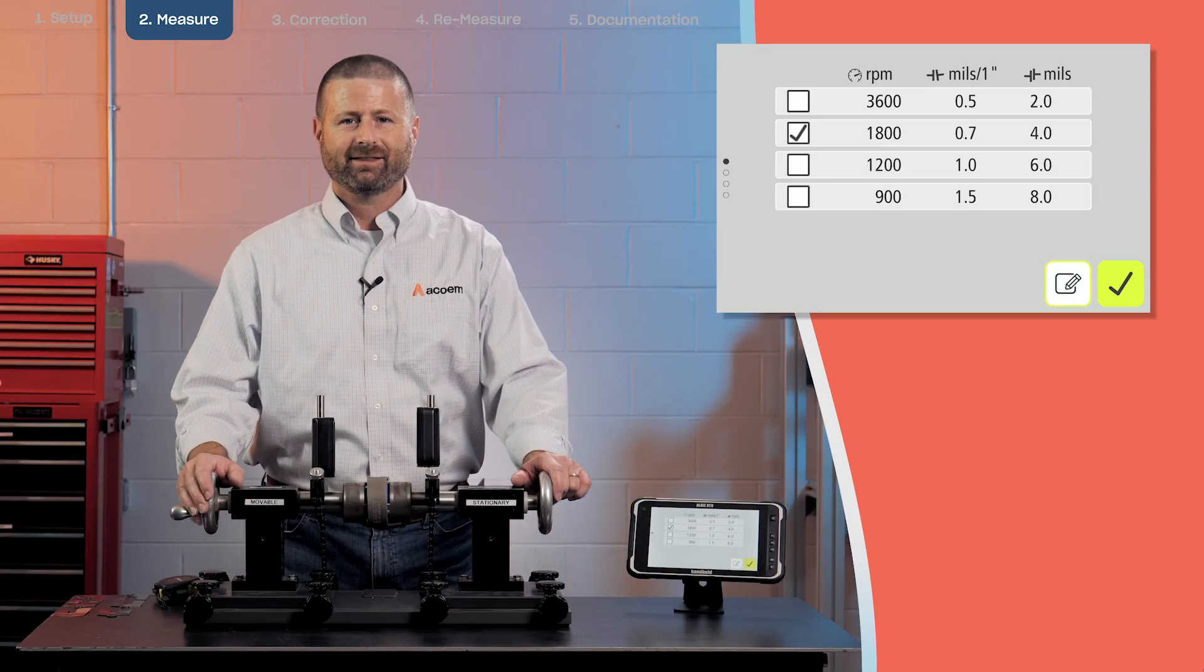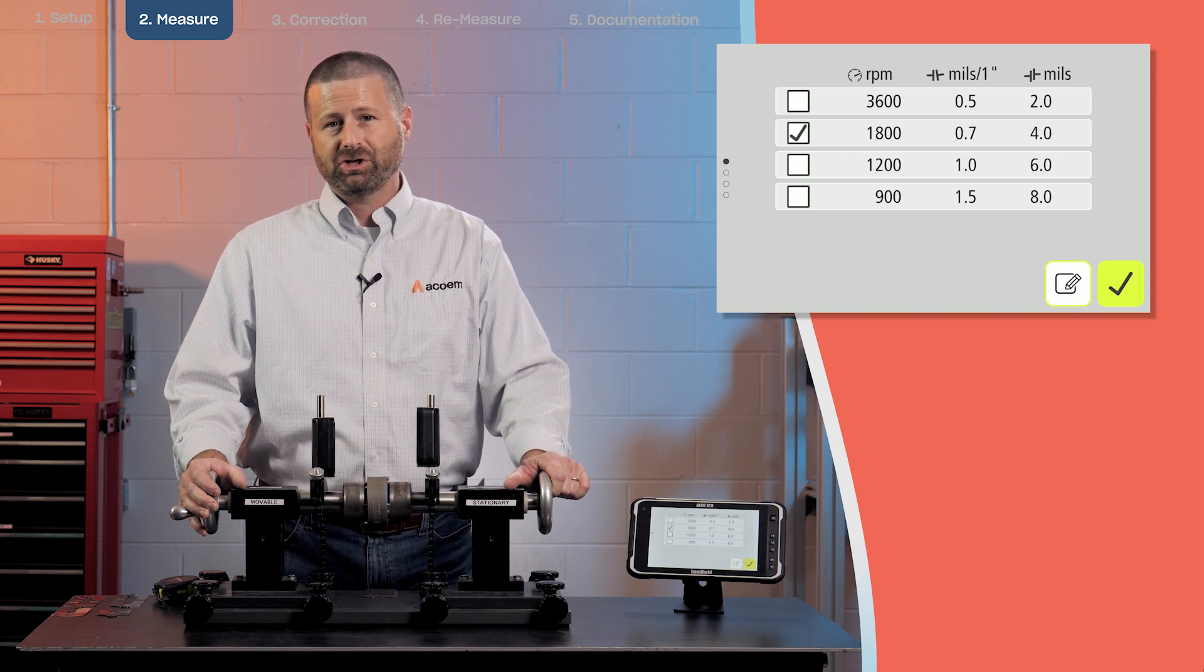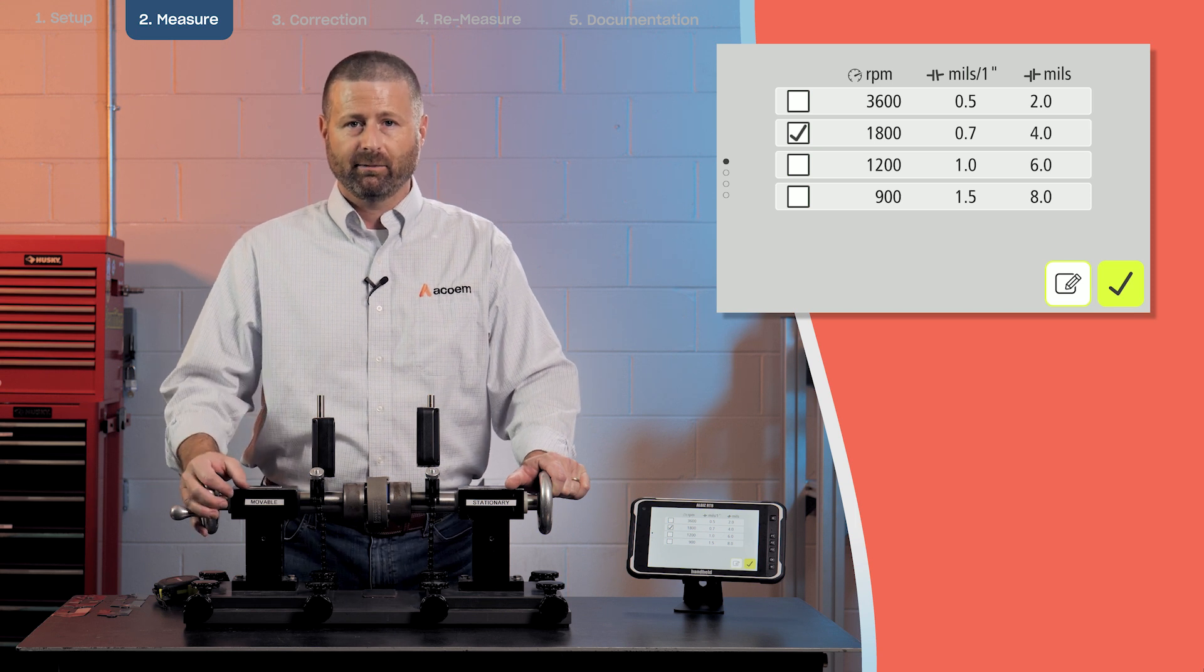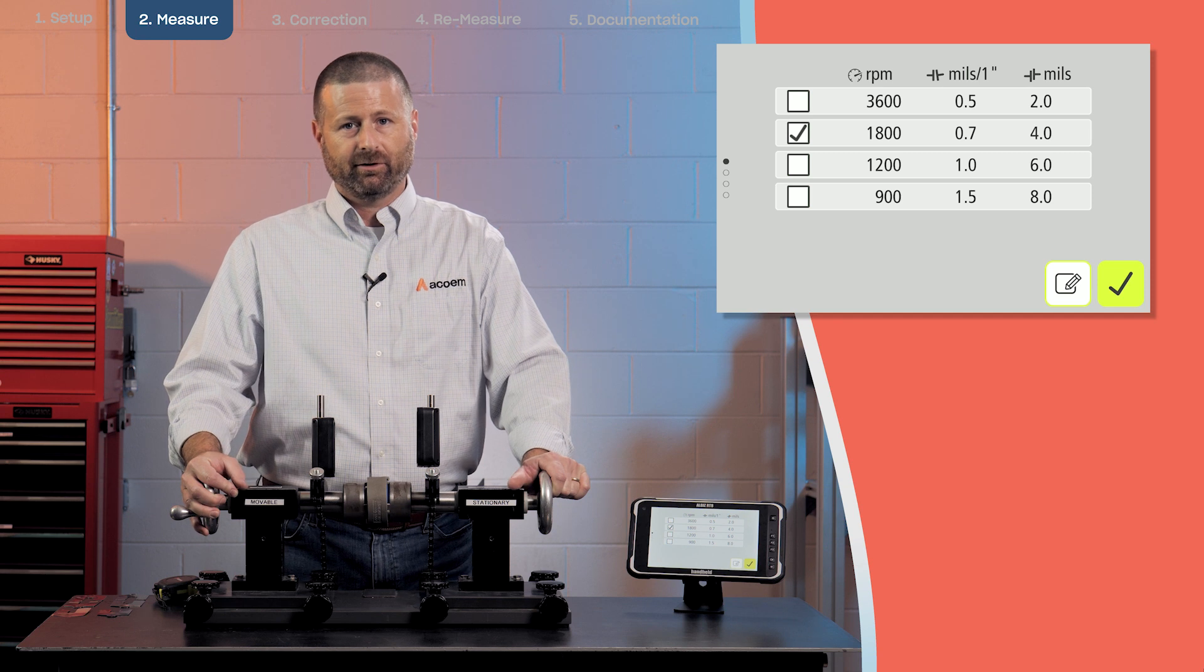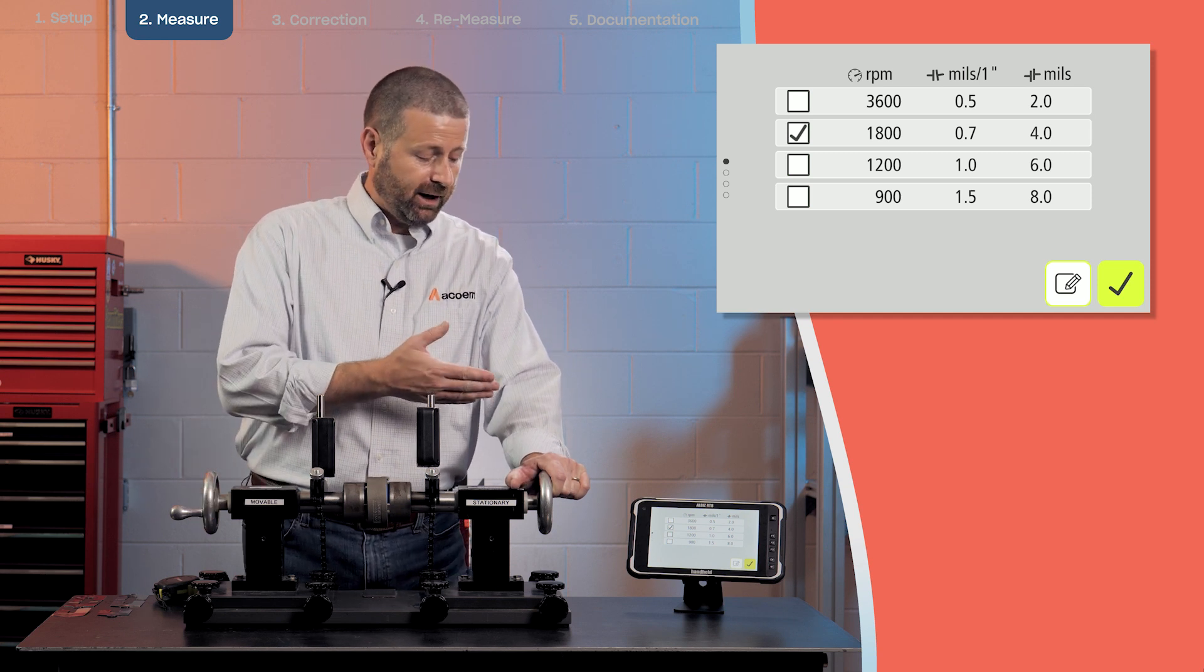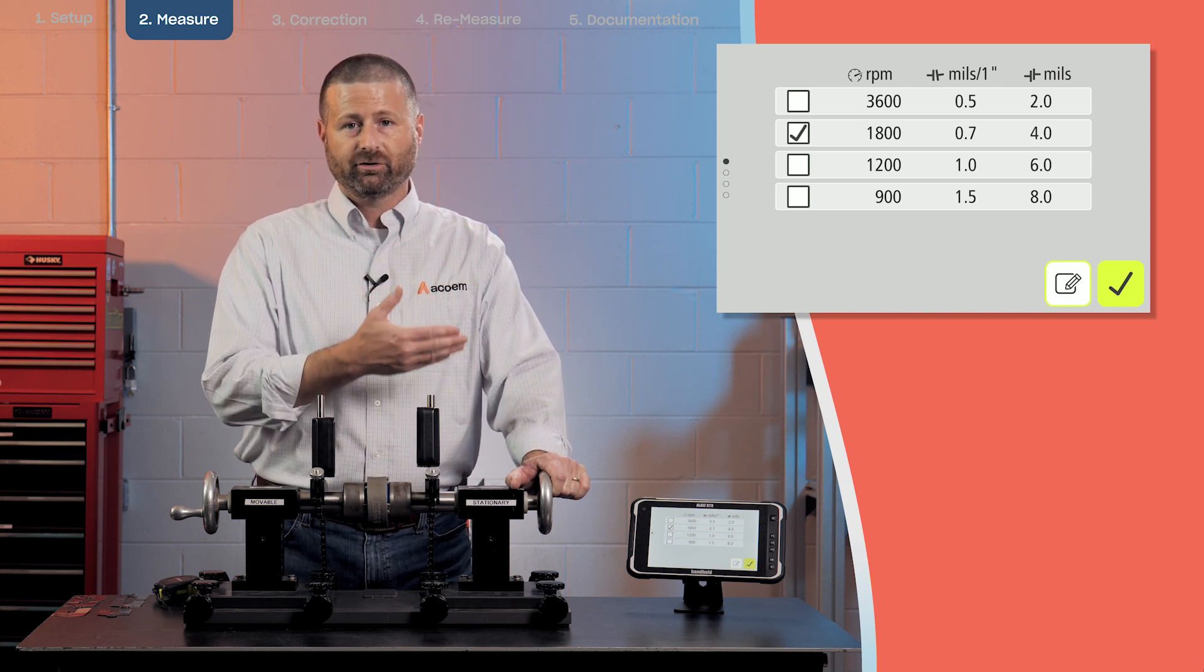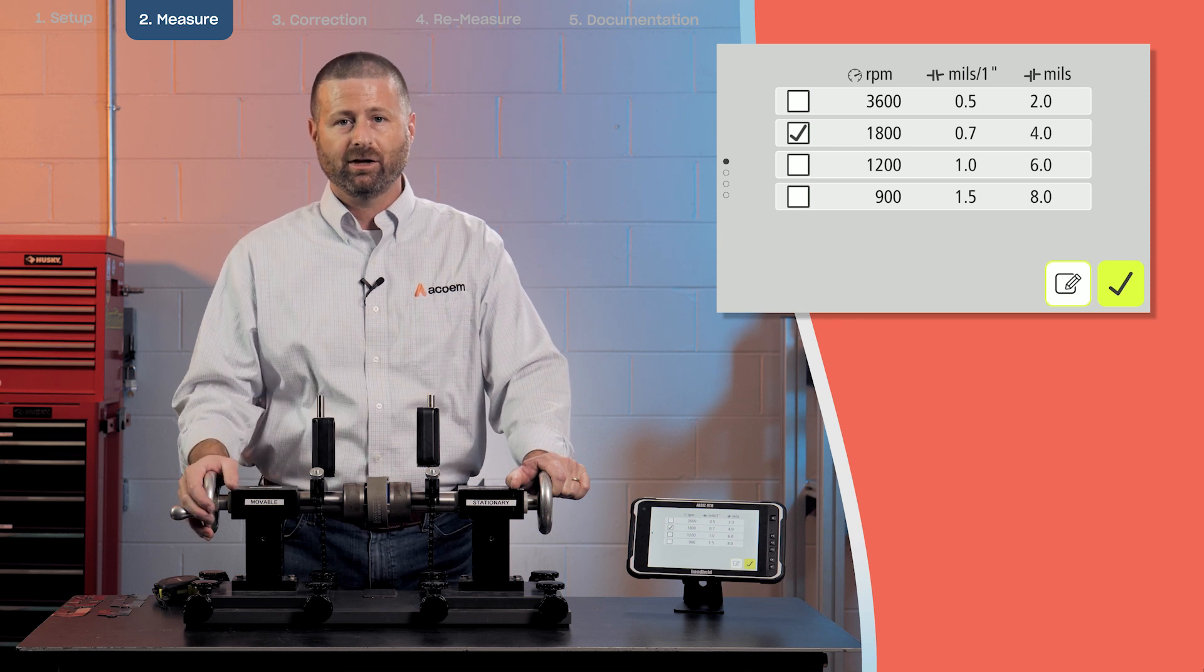Next I'm going to select the tolerance for my alignment. Tolerance is generally based on machine speed. The faster a machine rotates the closer we want to be with our alignment tolerance. I will select 1800 RPMs for this alignment and our chart has four selections. If you want to use your own selection for a tolerance there is an opportunity to input a user tolerance.